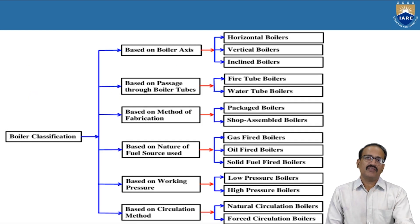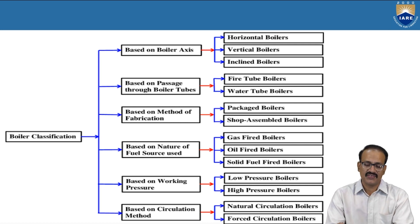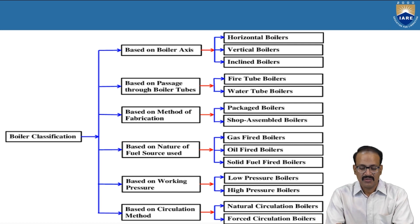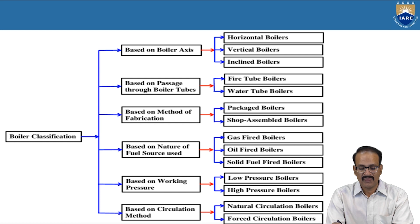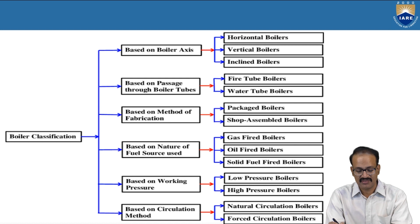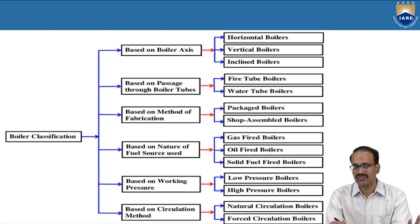Classification of boilers can be done on different bases: based on boiler axis — horizontal, vertical, inclined; based on what passes through the boiler — fire tube, water tube; based on method of fabrication — package and site-assembled boilers; based on nature of fuel source — gas, oil, solid fuels; based on working pressure — high and low pressure; based on circulation method — natural and forced circulation.